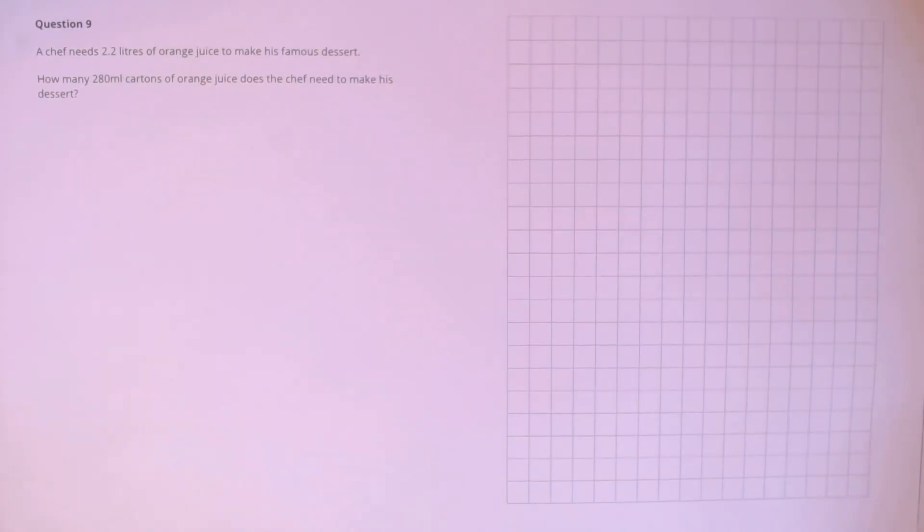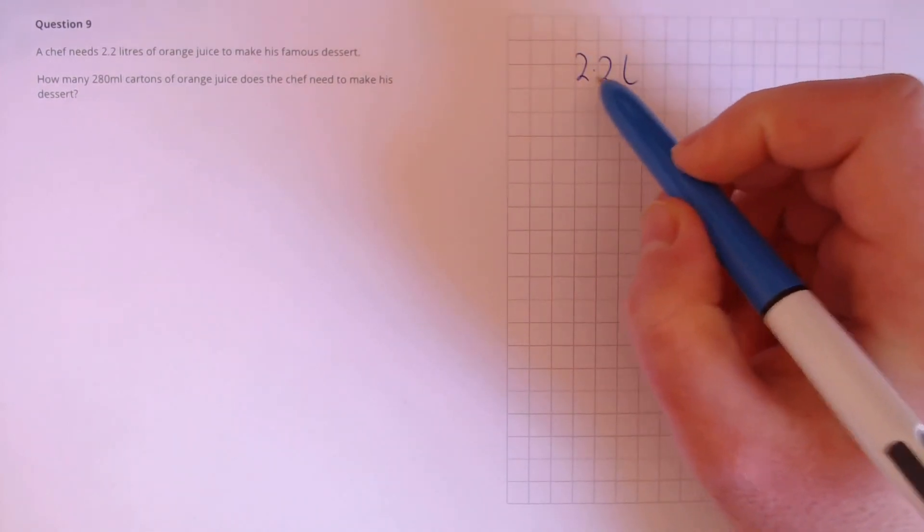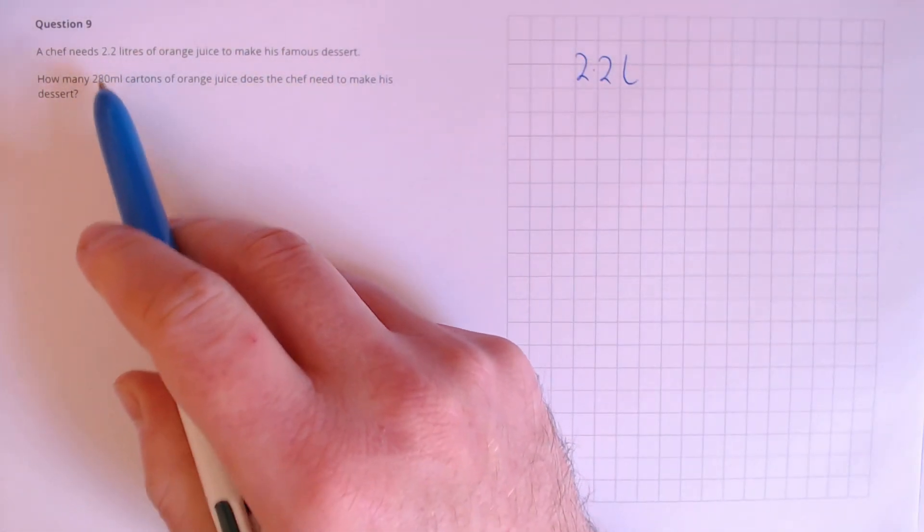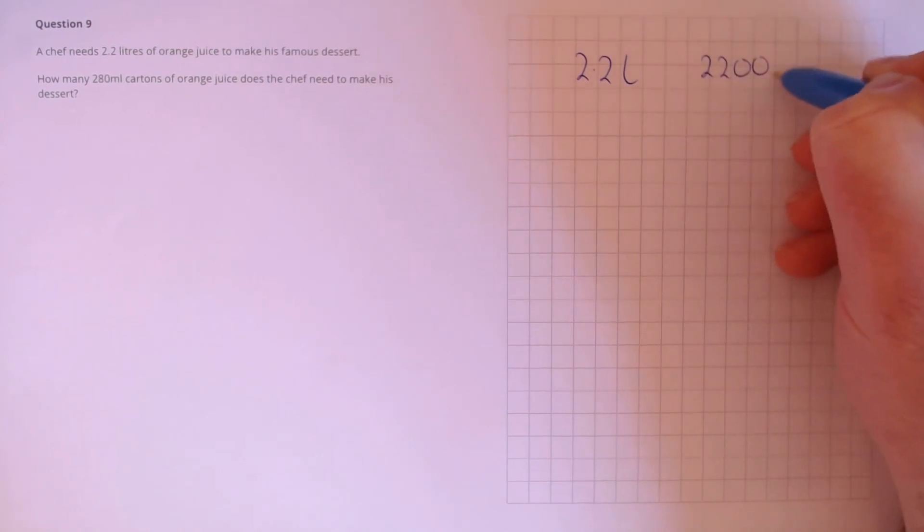Question 9. A chef needs 2.2 litres of orange juice to make his famous dessert. How many 280 milliliter cartons of orange juice does the chef need to make his dessert? First, let's convert that 2.2 litres into milliliters. We know that there are 1,000 milliliters in a litre, so this is 2,200 milliliters.